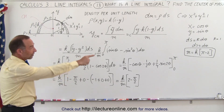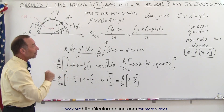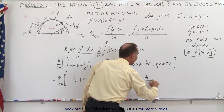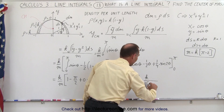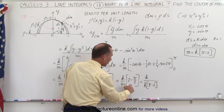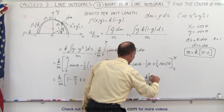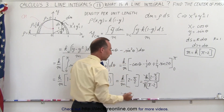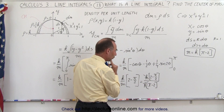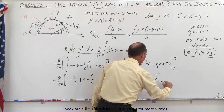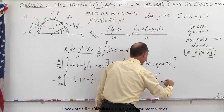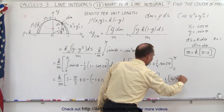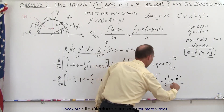Now, since we previously found that m equals k times (π minus 2), substituting gives k divided by [k times (π minus 2)], multiplied by (2 minus π/2). The k's cancel out, and factoring out one-half, in the numerator we get (4 minus π) and in the denominator we get (π minus 2). So the final answer is one-half times (4 minus π) divided by (π minus 2).